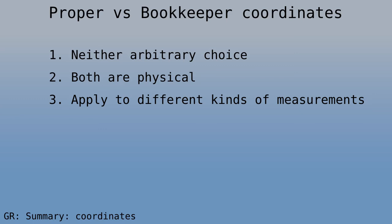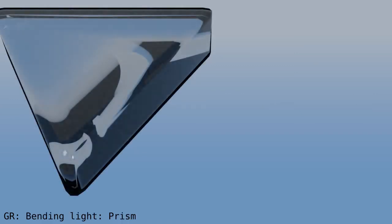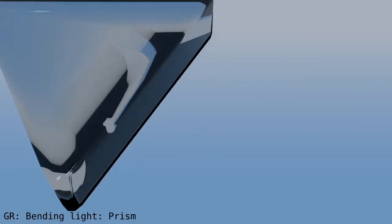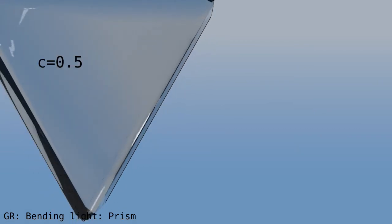First, let's look at how a prism works. Here's a prism made of some glass for which the speed of light is one half. In vacuum, the speed of light is one. And here's the light flash. Think of it as being made of two parts that travel in parallel.